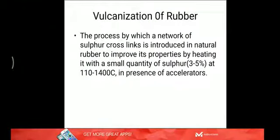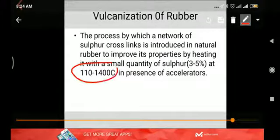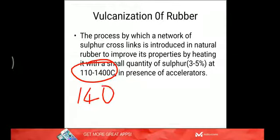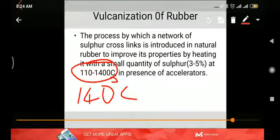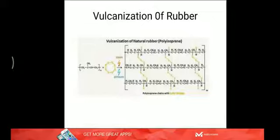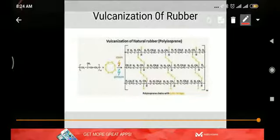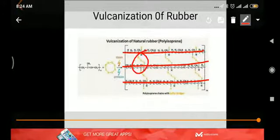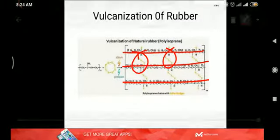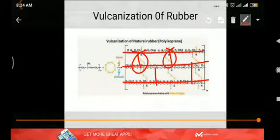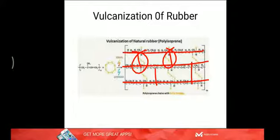To improve the properties, what is done? The process called vulcanization. That is, process by which a network of sulfur crosslinks are introduced in natural rubber to improve its properties by heating it with a small quantity of sulfur. So at, this is to be corrected, see, the temperature is, it is 110 to 140 only, 40 degrees Celsius, in presence of certain chemicals which are called accelerators. So that crosslinks appear. So natural rubber is heated with calculated quantity of sulfur. So what happens? See, these sulfur chains, the sulfur chains get crosslinked. These are the sulfur chains. And crosslinks appear due to sulfur like this. So when crosslinks comes, then there will be restricted movement and elasticity will improve. It will retract once the deforming force is released. You know, that is perfect elasticity.